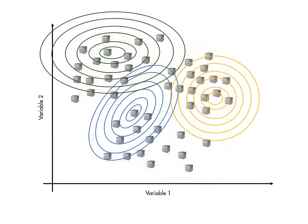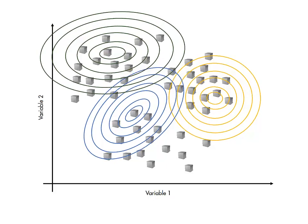Fitting the Gaussian mixture model is an iterative process, starting with initial estimates of the distribution parameters, then refining them.